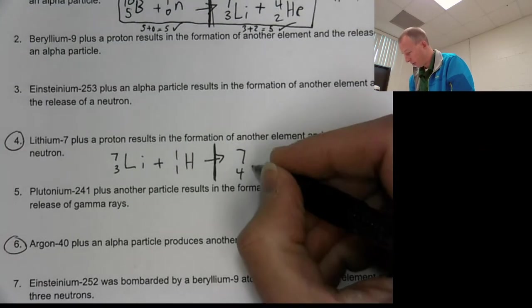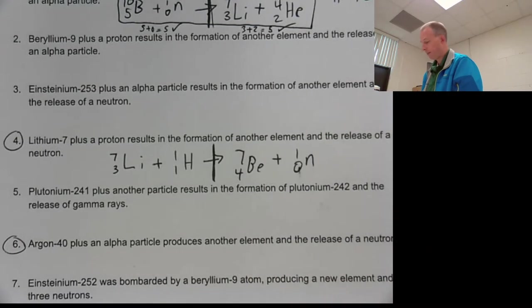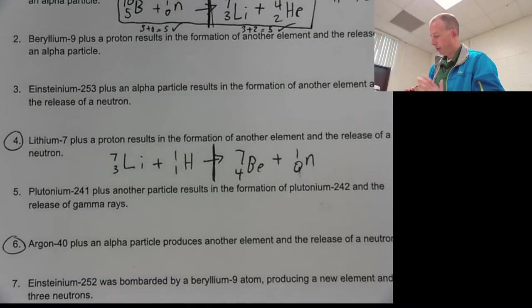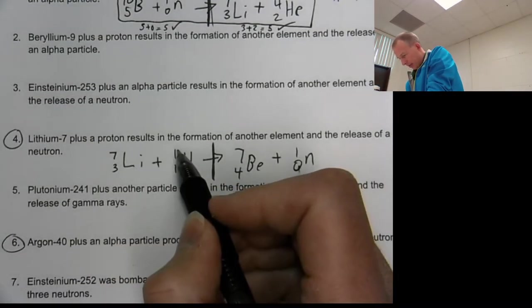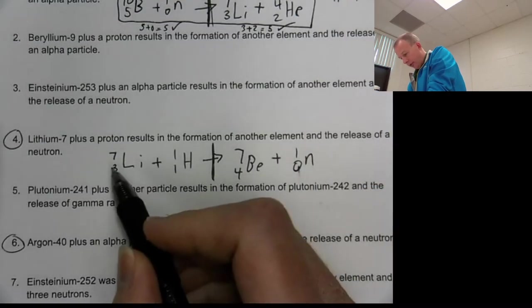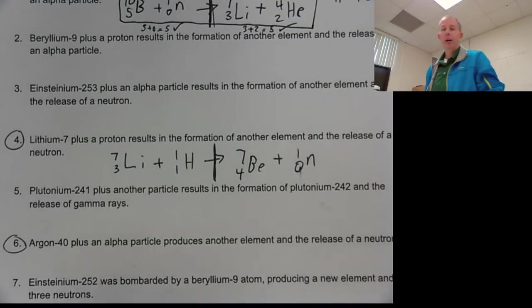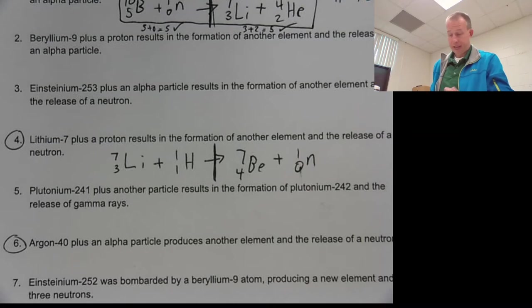So now we have an atomic number of four. We have our beryllium. So atomic number of four protons, that's beryllium. Now, in the end, go through and check and make sure everything adds up. So you've got seven plus one, seven plus one. Good. Three plus one, four plus zero. They match. That's the basic idea.